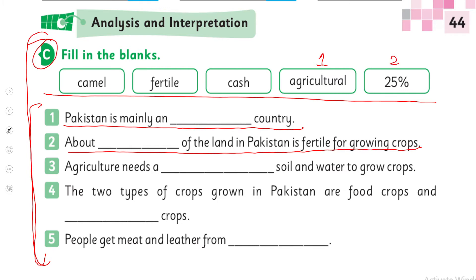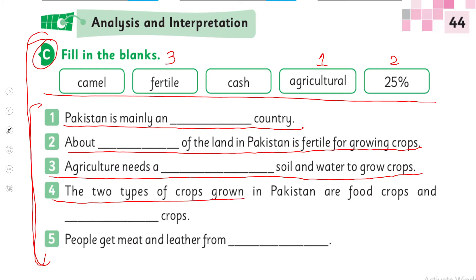Number three: agriculture needs a fertile soil and water to grow crops. The two types of crops grown in Pakistan are food crops and cash crops. People get meat and leather from camel.